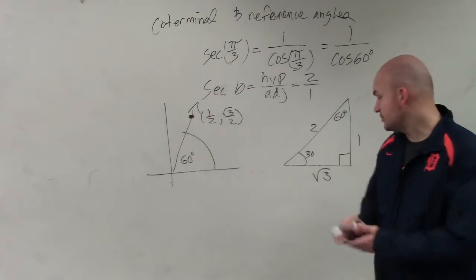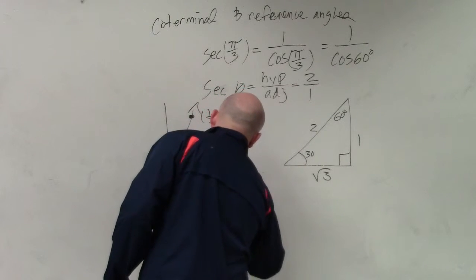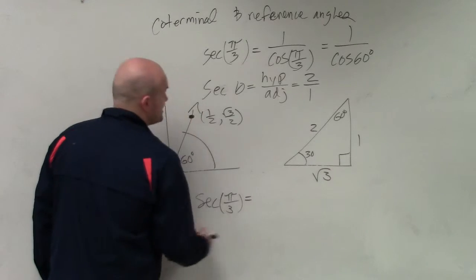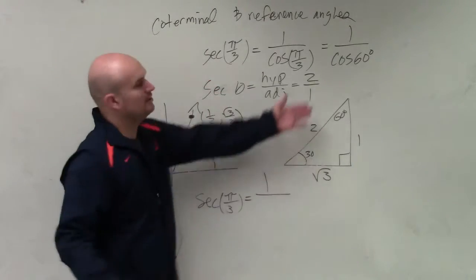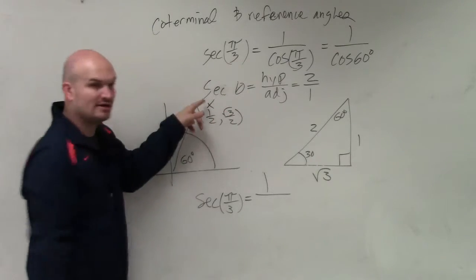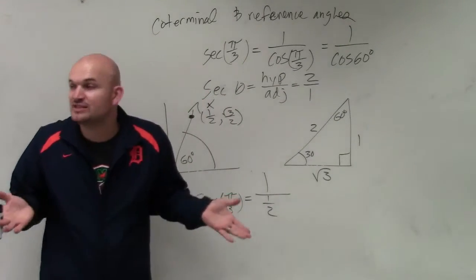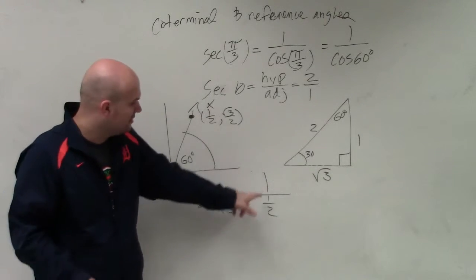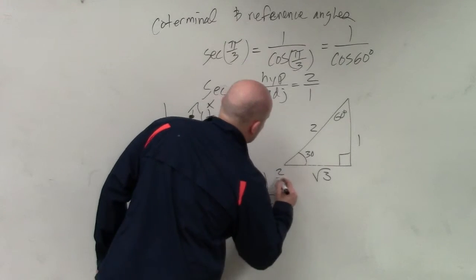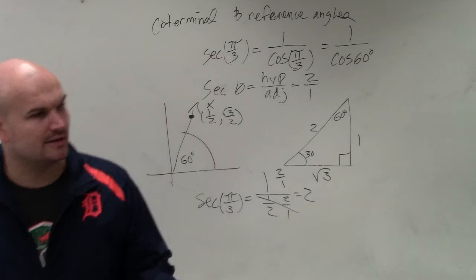So therefore, if I say the secant of π over 3, which is the same thing as 60 degrees, we know that's equivalent to 1 over the cosine of 60. Well, the cosine of 60 is equal to the x coordinate, which is 1 half, so 1 over 1 half, right? I'm just doing this a different way, because you could do both. Well, how do you do 1 divided by 1 half? You multiply by the reciprocal. So it equals 2.